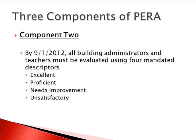Component 2 of PARA has already been implemented by school districts, requiring that by September 2012, all building administrators and teachers must be evaluated using these four mandated descriptors: excellent, proficient, needs improvement, or unsatisfactory. No matter what tool schools are using to evaluate, or when they need to include the student growth factor, they are required to use these four descriptors, and these four descriptors are mandated by the state of Illinois.